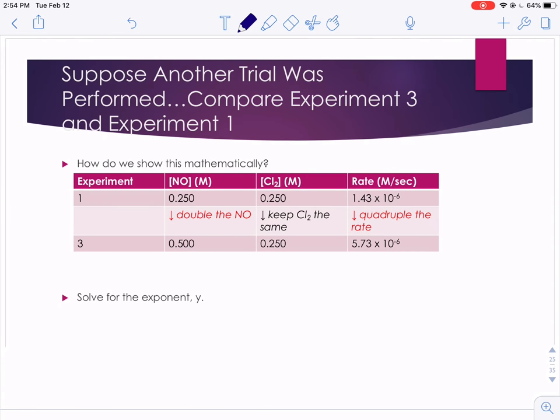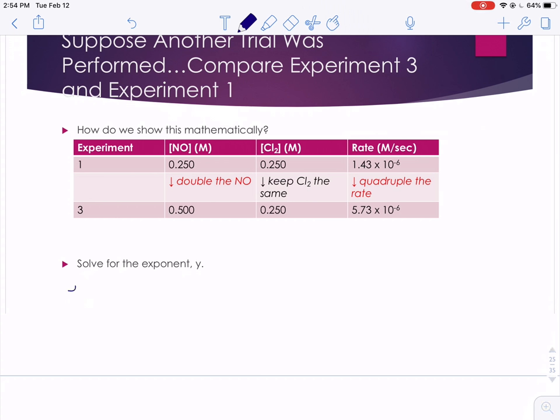So how do we show that mathematically? Well, this time we're comparing experiment 3 to experiment 1. We're going to take the concentration of our nitrogen monoxide in experiment 3 over its concentration in experiment 1. We're going to raise that to some mystery exponent, the order, y.